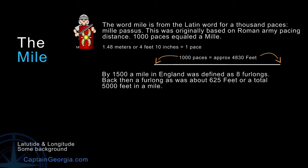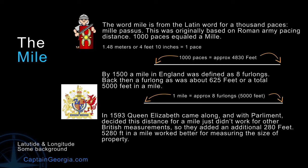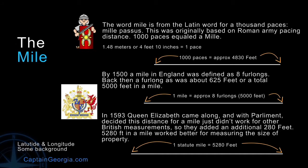But in 1500, a mile in England was defined as eight furlongs. A furlong was about 625 feet, for a total of 5,000 feet in a mile, making the mile slightly longer. In 1593, the Queen and Parliament decided the distance for the mile just didn't work out that well. A lot of British measurements required a slightly different length, so they added an additional 280 feet to the current mile, making it 5,280 feet.